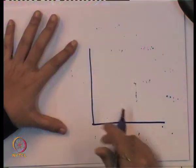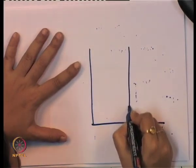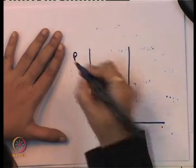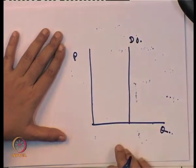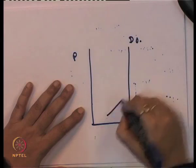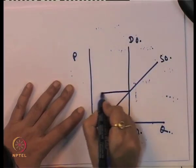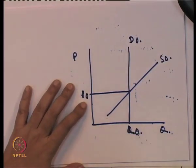Then we will see the second case — the perfectly inelastic demand curve. In case of a perfectly inelastic demand curve, the demand curve takes a shape which is parallel to the price axis. This is your demand curve. Q0 is equilibrium quantity, S0 is the supply curve, P0 is equilibrium price. Imposition of tax shifts supply to S1; this is the total amount of tax and this is the new price P1.